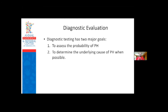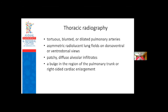When it comes to testing, there are two major goals when evaluating these dogs diagnostically. One is to assess: do we think pulmonary hypertension is present? And the other is to ask: what do we think the underlying cause of this pulmonary hypertension is? For any dyspneic animal, chest x-rays are usually where we start.